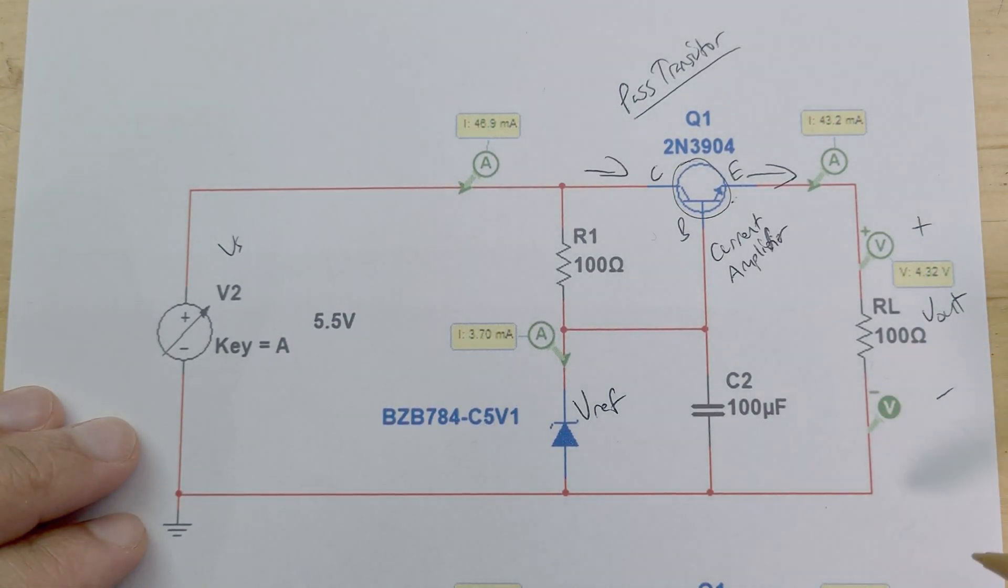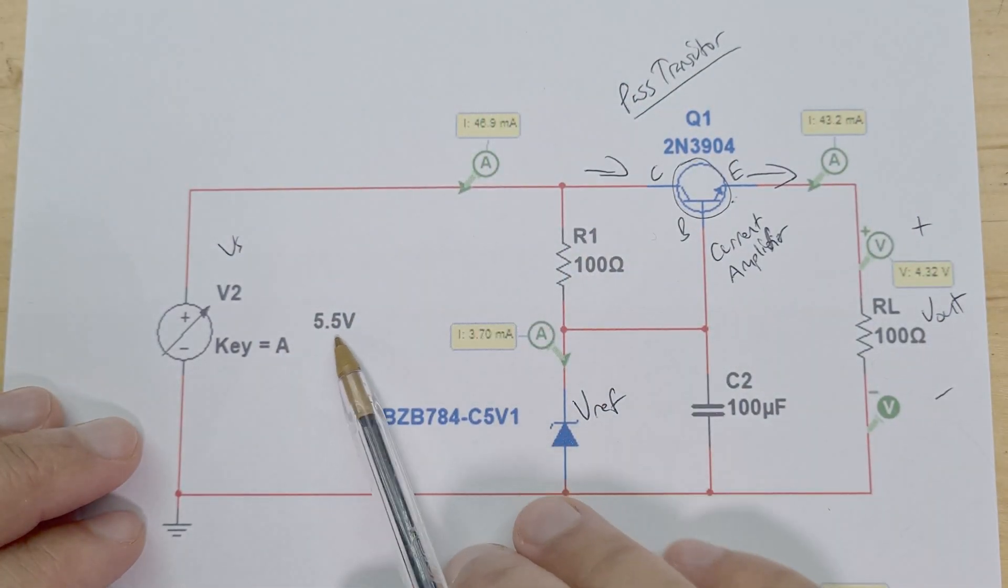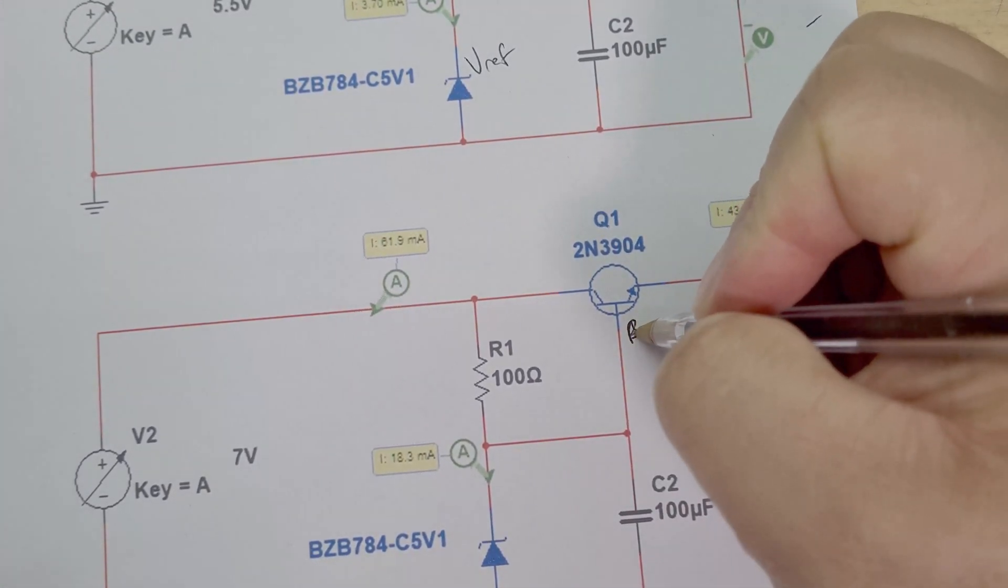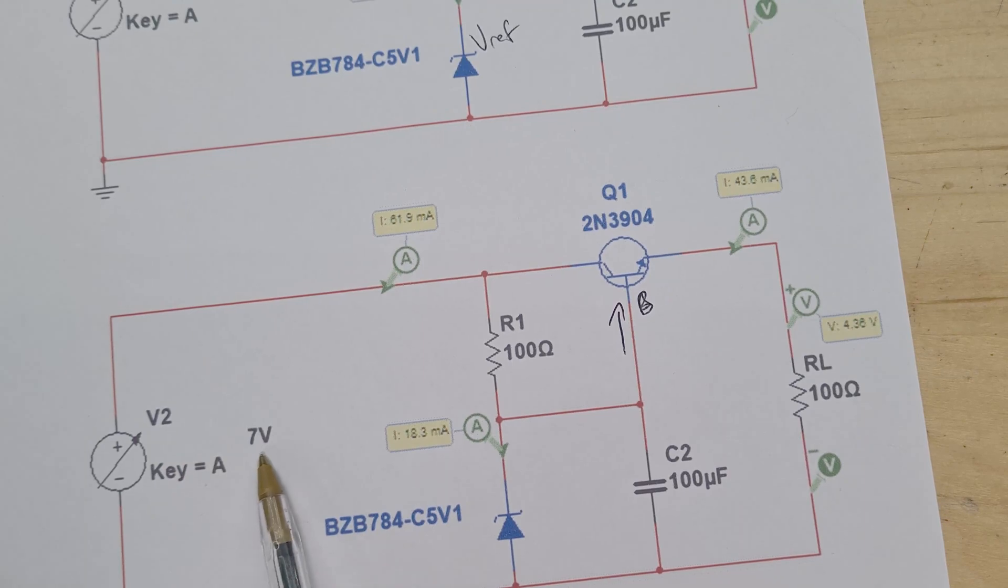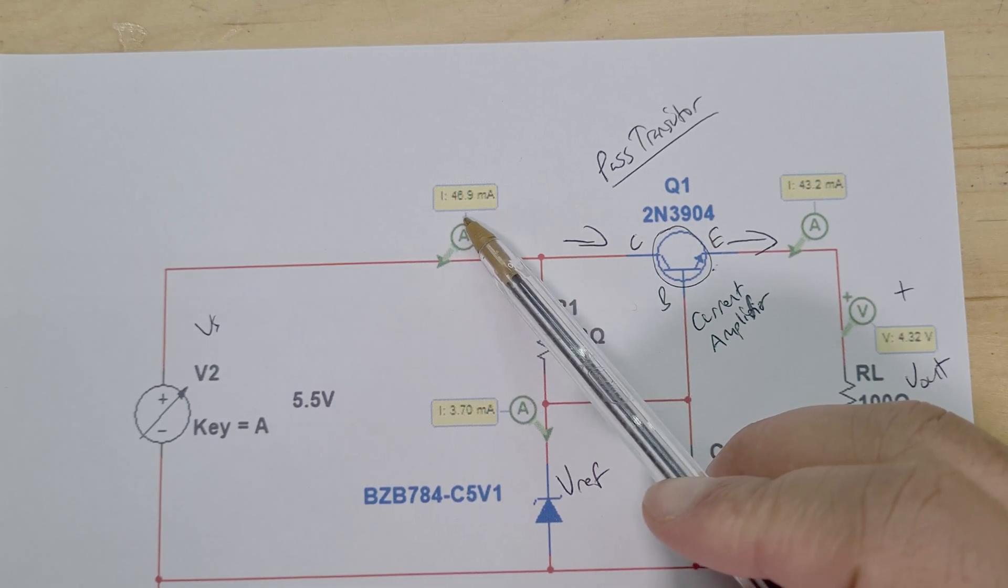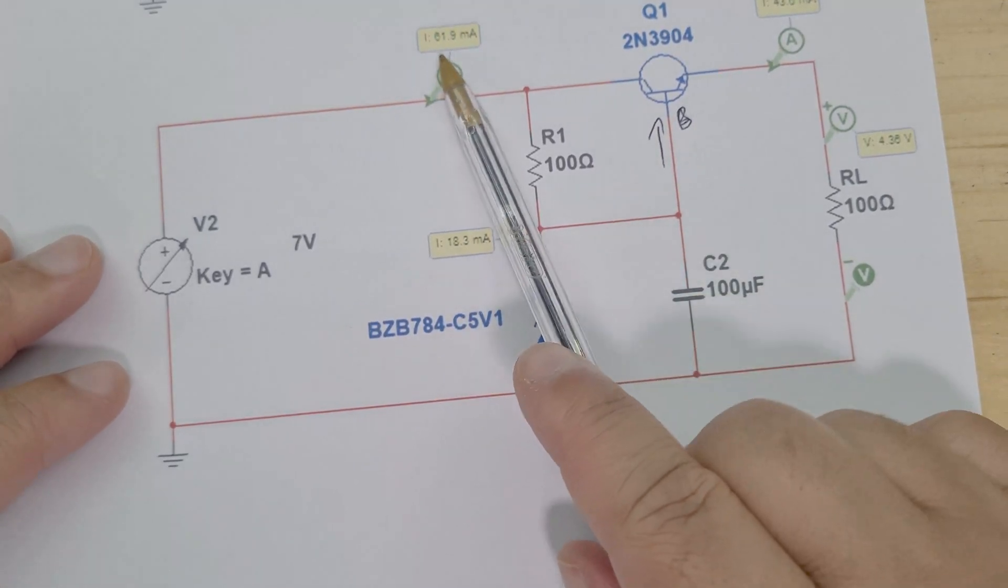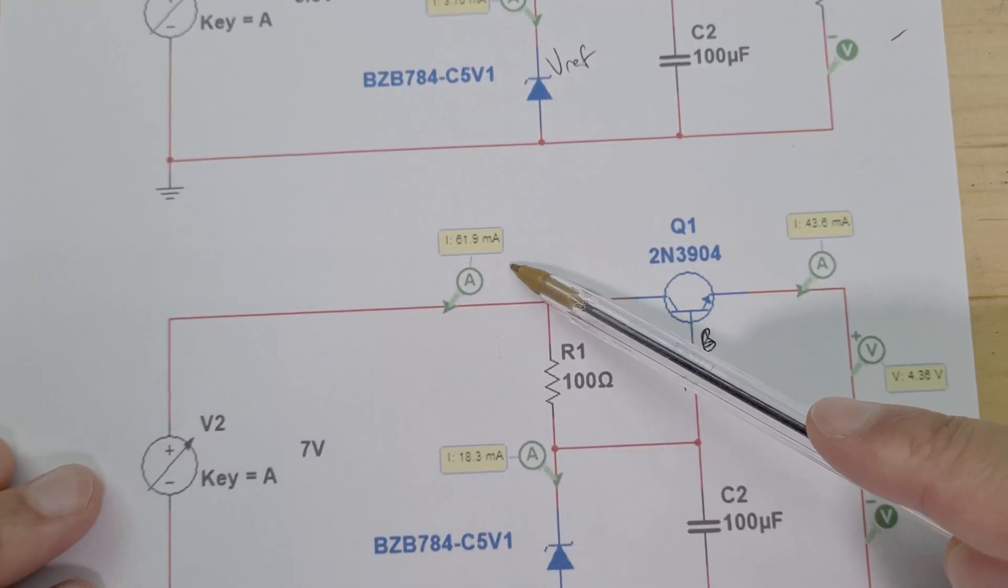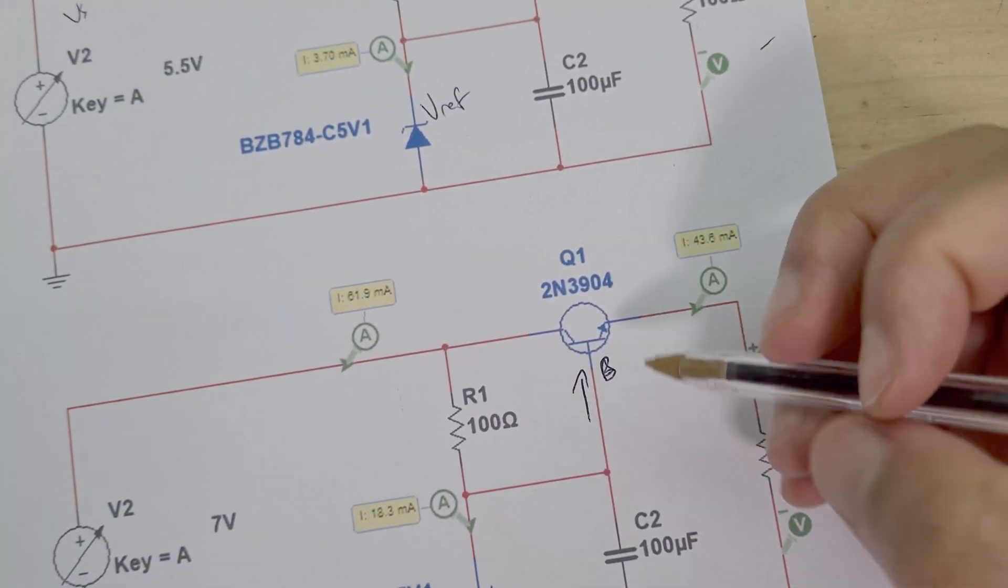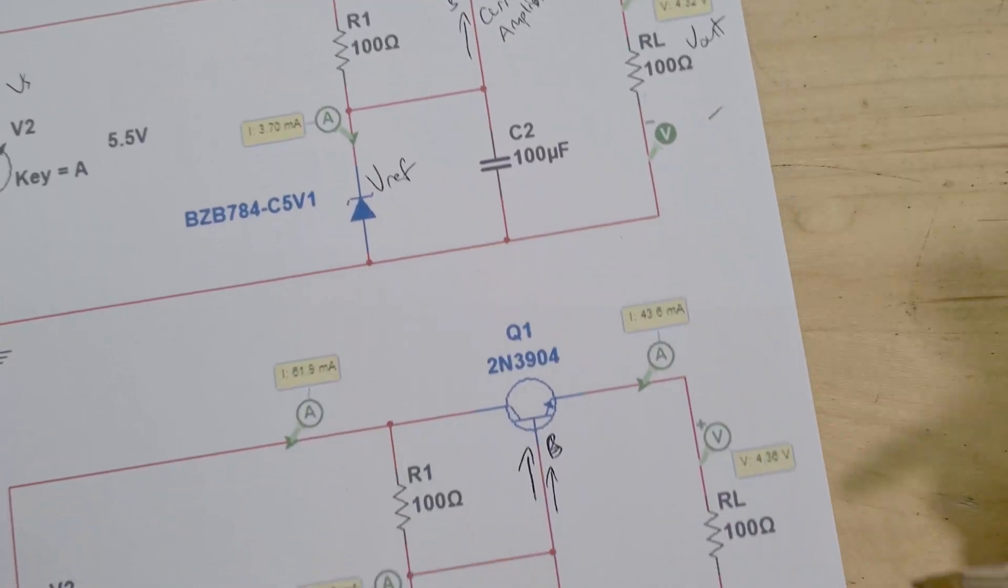So without going into too much detail because I hate when these videos become like a math lesson, when you have your variable voltage here increasing, let's say from 5.5 volts up to 7 volts, what happens is that the current at the base here is changing as you're increasing the voltage. So you can see here at 5.5 volts I've got 46.9 milliamps of current there. I've got 3.7 milliamps of current going through the Zener diode here. It's gone up to 61, so from 46 to 61, and then from 3 milliamps up to 18.3 milliamps.